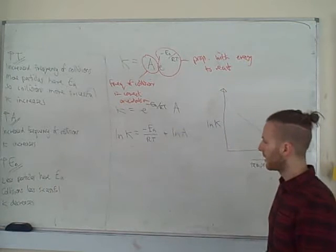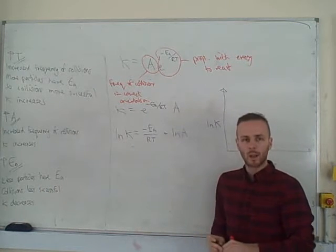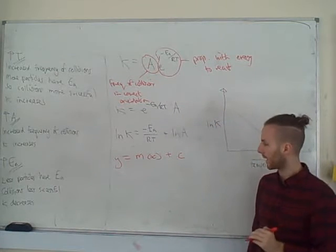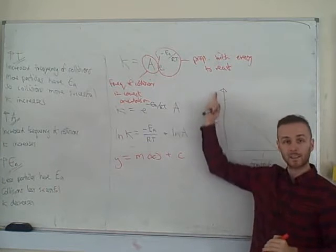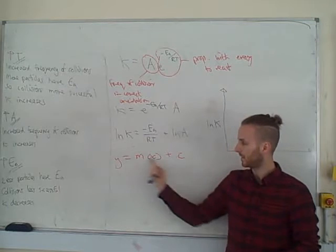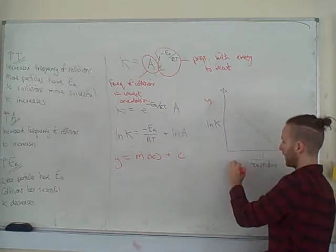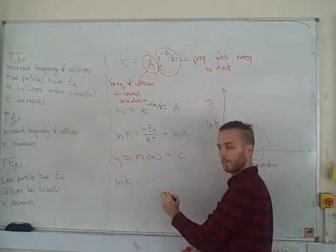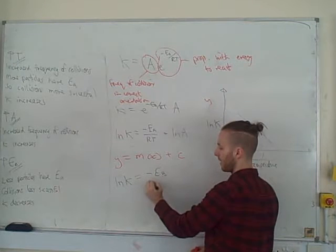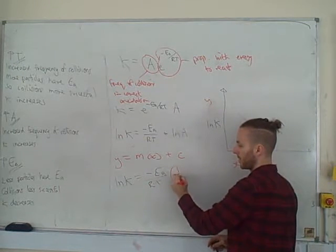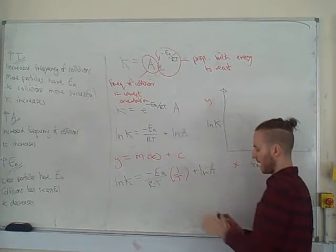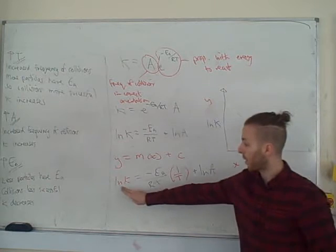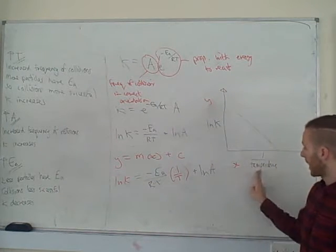So what we can do is we can compare this, and again it's a little bit of maths, to a kind of graphical equation: Y equals mx plus c. Where c is the intercept on the y-axis and m is the gradient of your graph. So here's my y-axis, here's my x-axis. Let's slightly change this equation. I'm going to say ln of k is equal to minus Ea over R, 1 over temperature, plus ln of A. Let's write this in red as well.